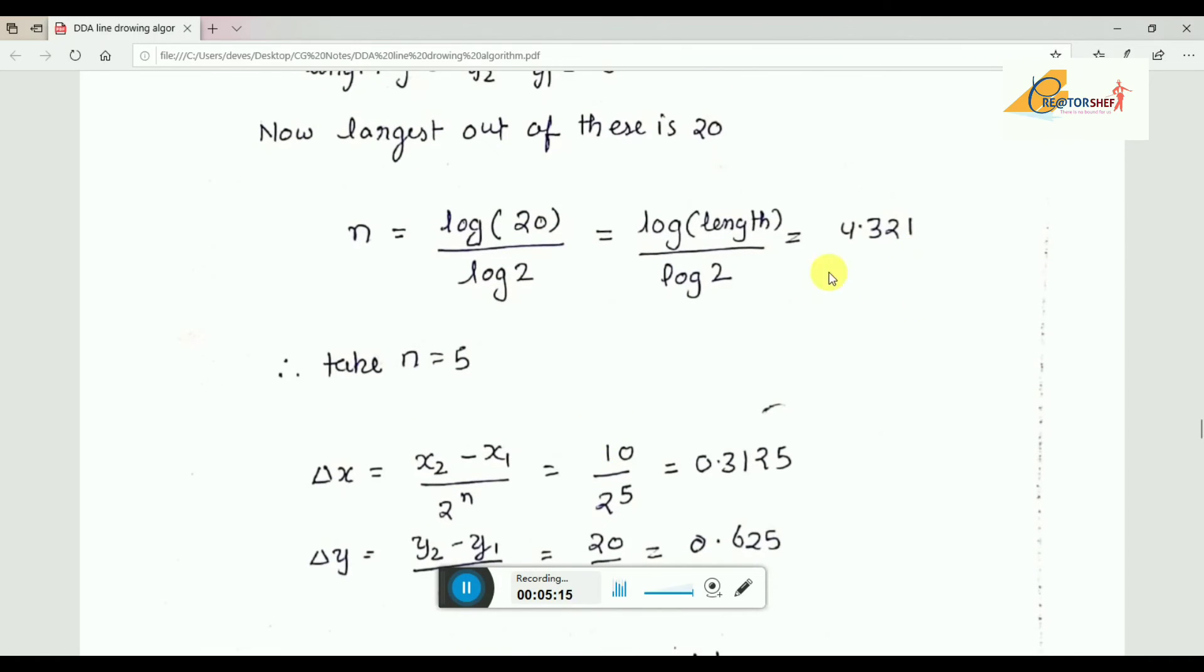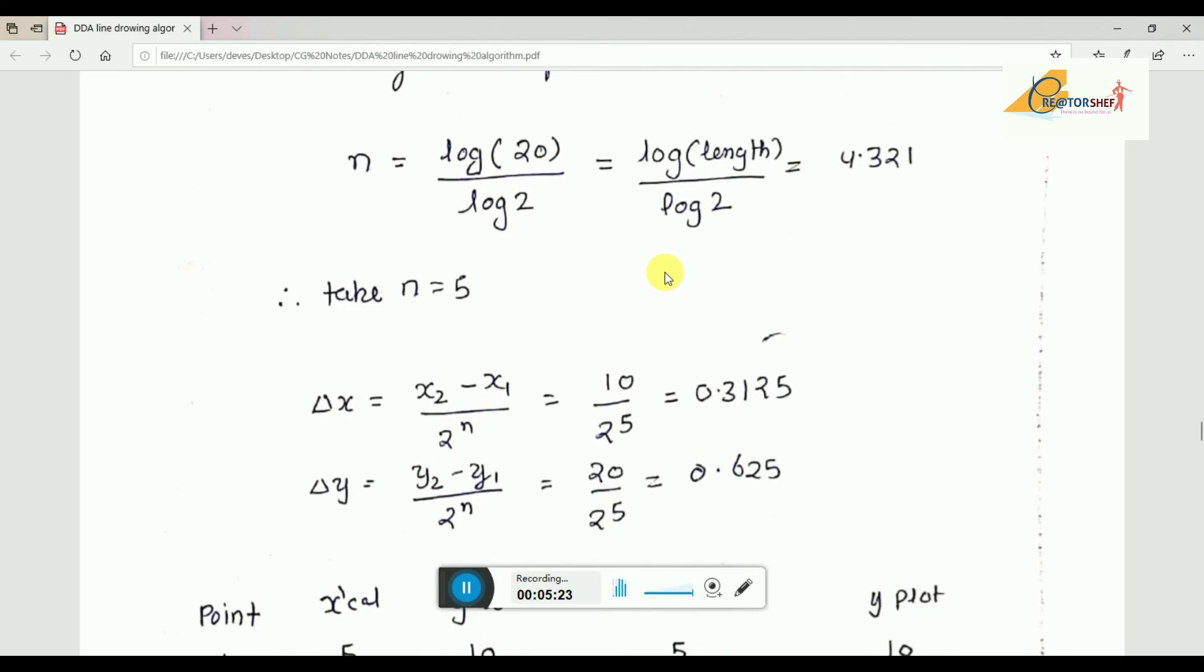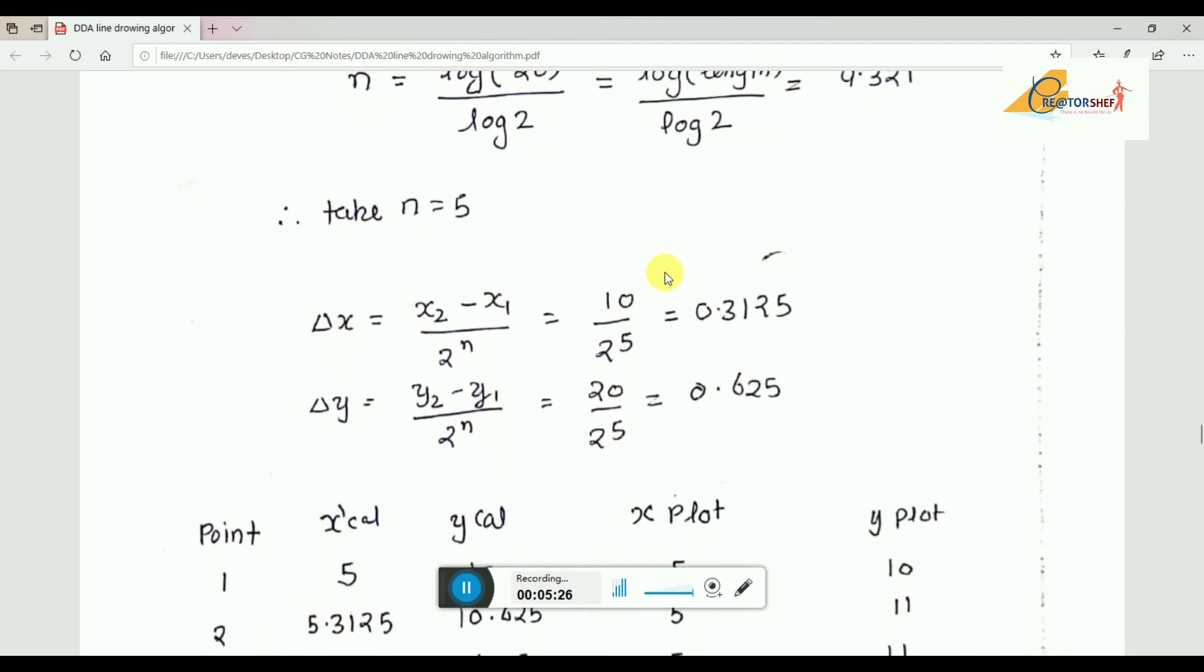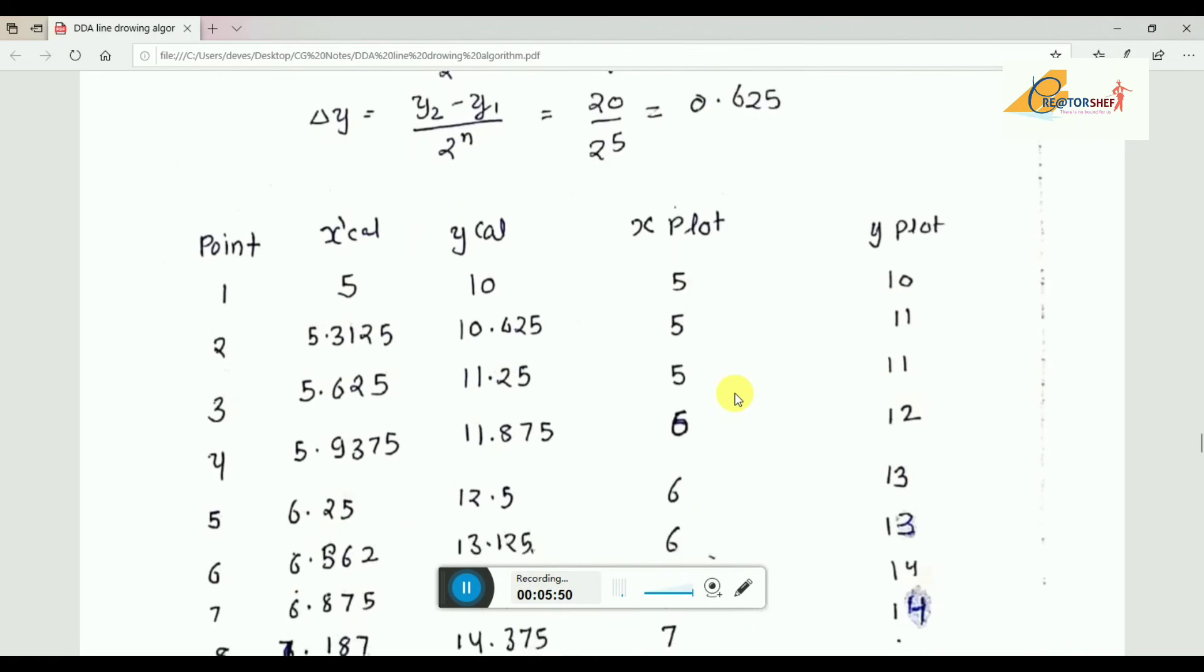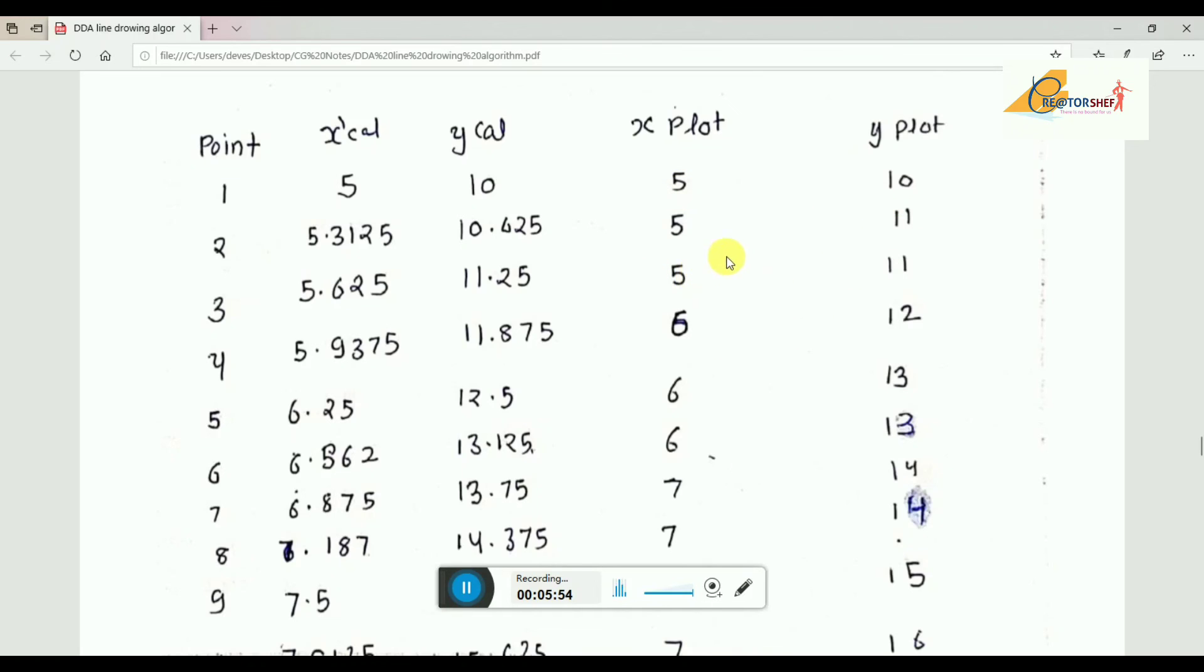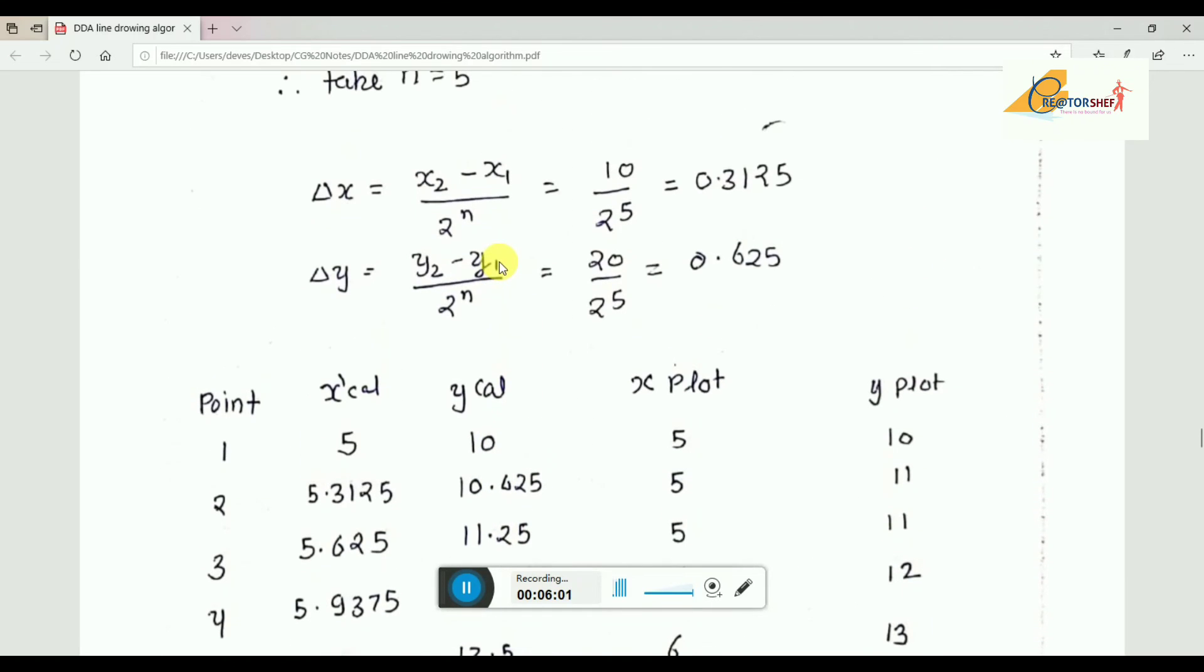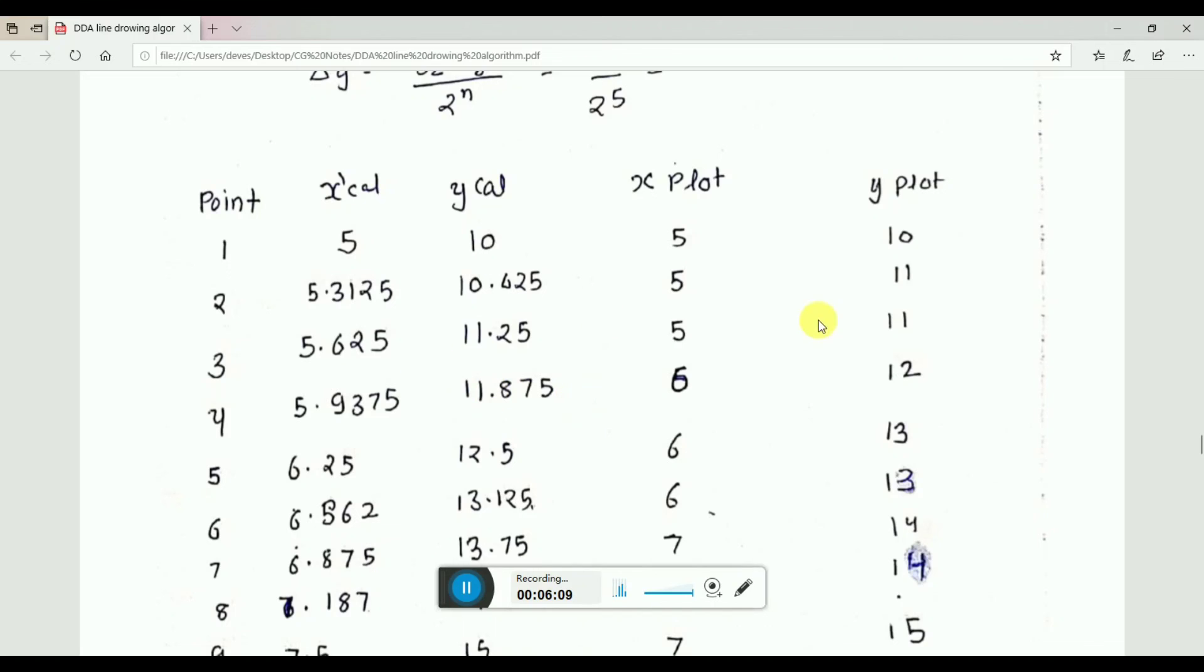So the greater value in integer format is 5, so n = 5. Now we compute increments. Δx increment = Δx / 2^n and Δy increment = Δy / 2^n. So 2^5 = 32. We get Δx = 10/32 = 0.3125 and Δy = 20/32 = 0.625. Starting from (5, 10), we add these increments: 5.3125, 10.625, and so on. We use approximate values for plotting.